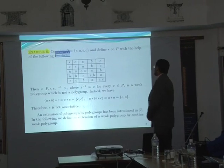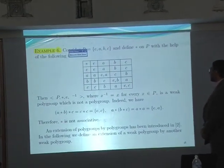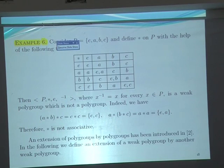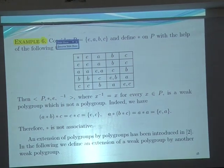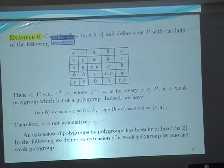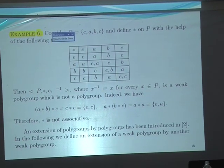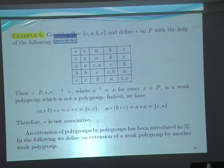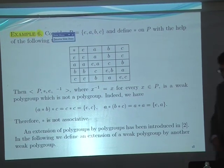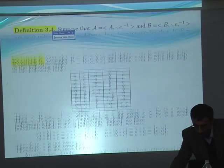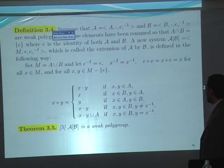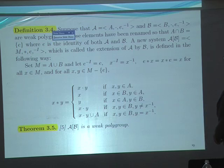In this table, you can see another example of the polygroup — a big polygroup. You can see this structure satisfies weak associativity, which is not full associativity. And in this definition, we can combine two polygroups to obtain a big weak polygroup.